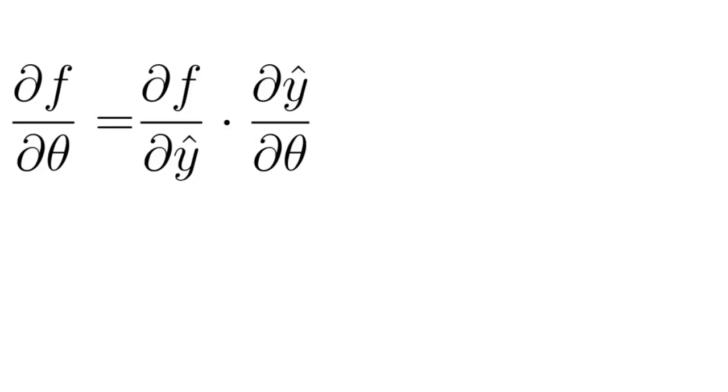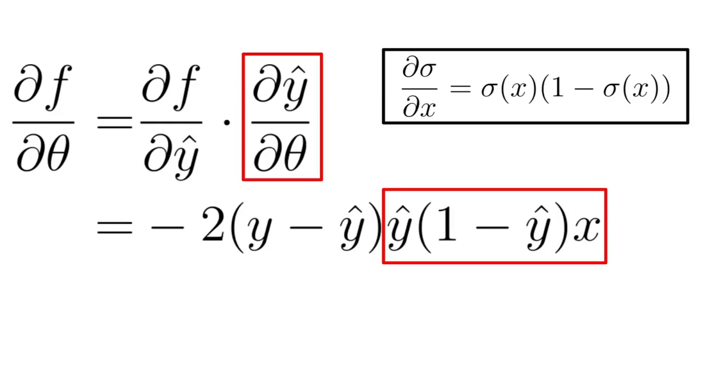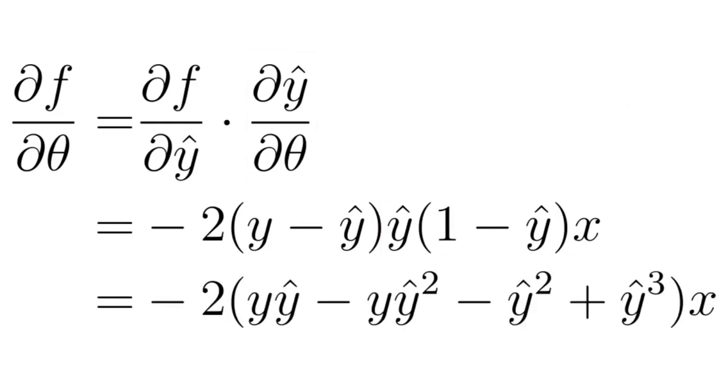Let's compute the first derivative. If we apply the chain rule, we obtain that df/dθ is equal to df/dŷ multiplied by dŷ/dθ. And if we were to expand this further, we obtain this. The first term is equal to 2(y - ŷ) and the second term is equal to x·ŷ(1 - ŷ) from the derivative of the sigmoid function. Let's also rewrite this so it would be easier for us to compute the second derivative.